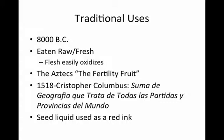The avocado was also important in the Aztec civilization and was referred to as the fertility fruit due to the fact that its shape resembles that of male testicles. It therefore had a sexual connotation in the Aztec culture. The first written mention of the avocado was in a journal written by Christopher Columbus during his conquest of Mexico. The liquid found in the seed of the avocado was also used as an ink by the conquistadors, as it turned red when exposed to air.